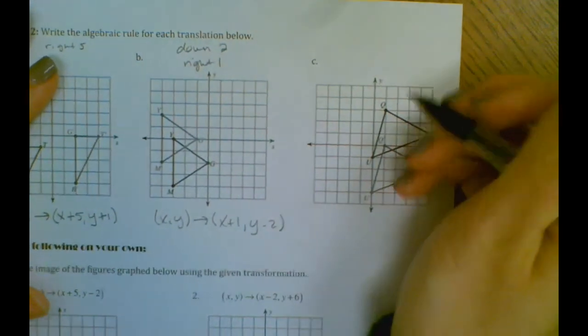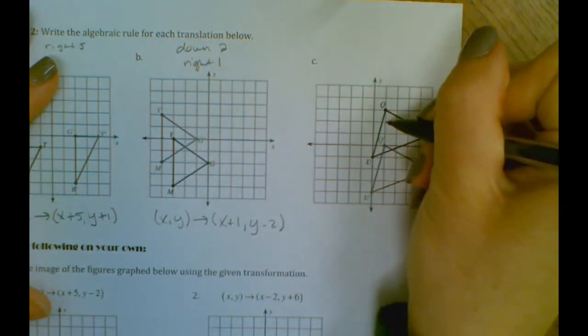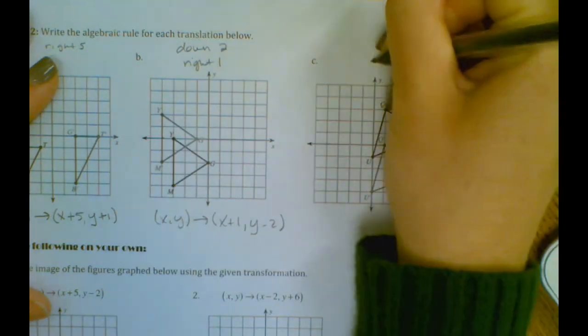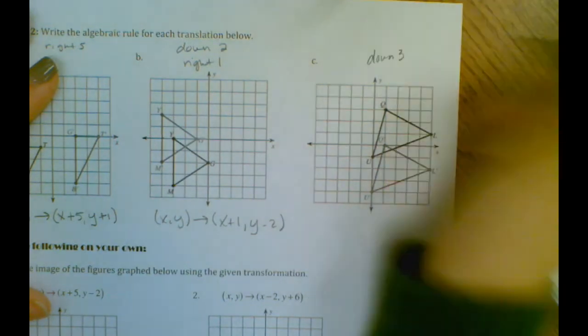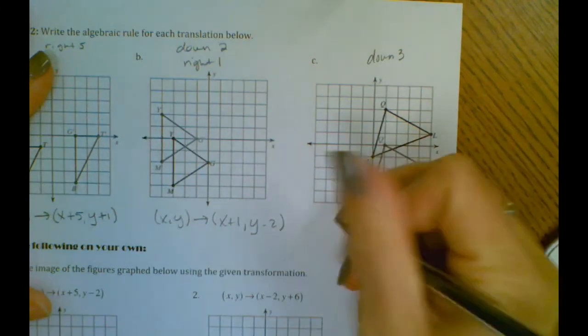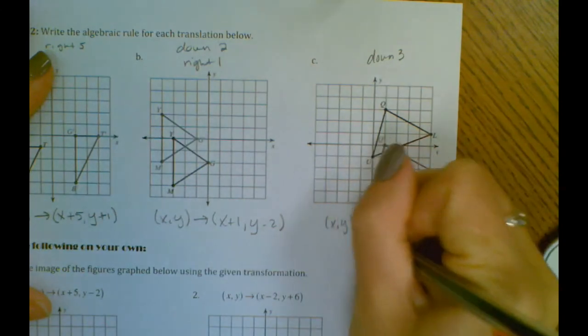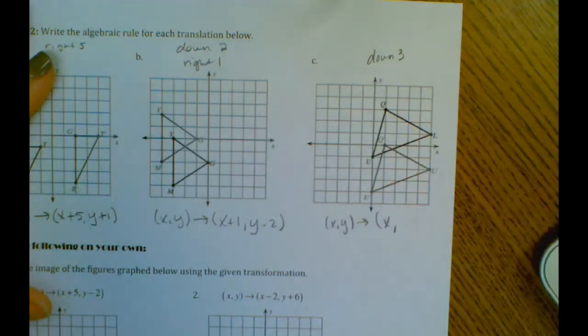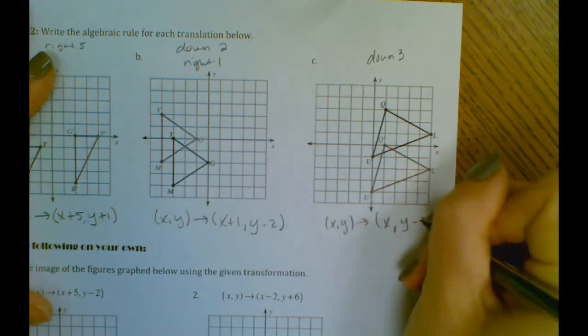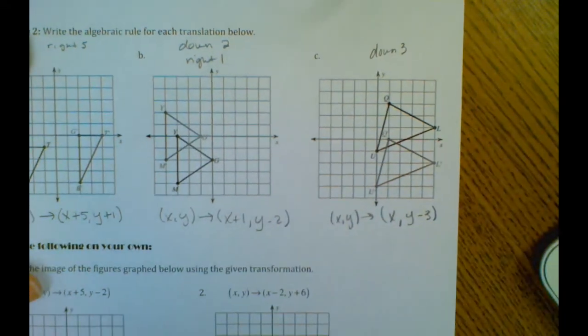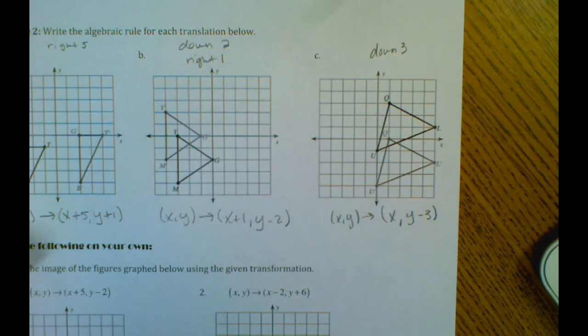Okay, over here for letter C, if we look at Q, we moved down one, two, three. And we didn't move right or left. So we would say X stays the same, Y moved down three, so it's subtracting three.